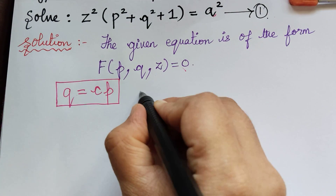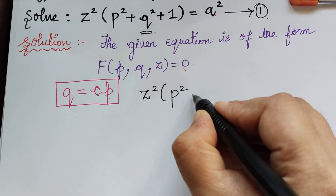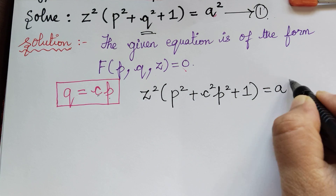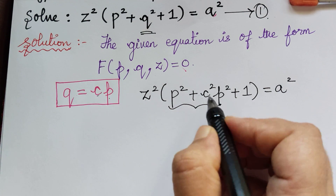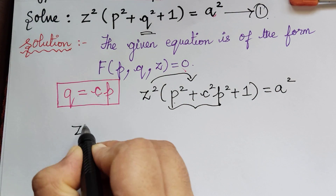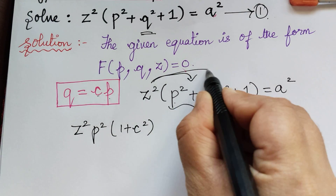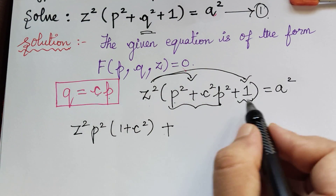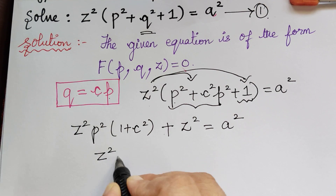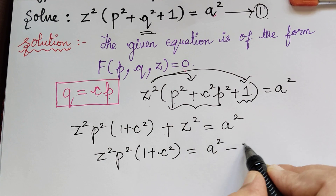Substituting into equation 1: z squared multiplied with p squared, and since q = cp, we get plus c squared p squared, plus 1, equals a squared. Taking p squared common and multiplying z squared through the first two terms separately, we get z squared p squared multiplied with (1 + c squared), plus z squared, equals a squared.